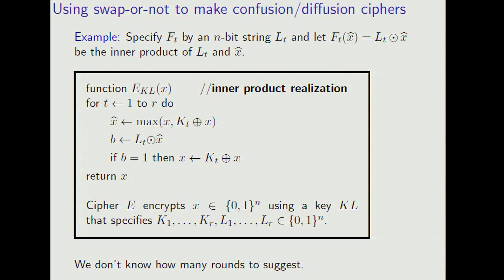What we propose in the paper is to specify ft by an n-bit string Lt and then define ft of x hat as the inner product of Lt and x hat. We don't know how many rounds to suggest to make this into a good cipher. We'd love to hear from cryptanalysts on this issue.